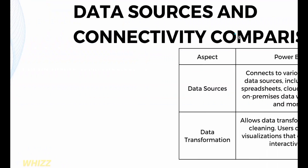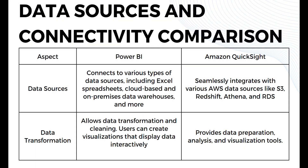Let's start with the data sources and connectivity comparison. In terms of data sources, Power BI connects to various types including Excel spreadsheets, cloud-based and on-premises data warehouses, and many more. While Amazon QuickSight seamlessly integrates with various AWS data sources like S3, Redshift, Athena, and RDS.